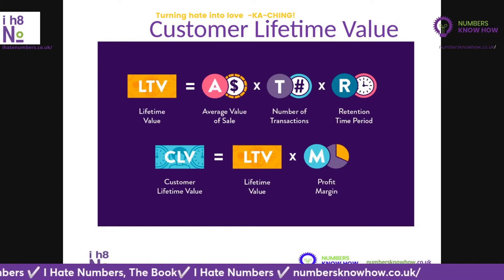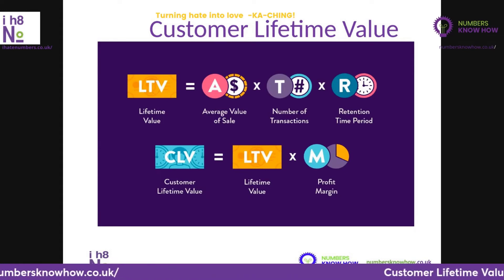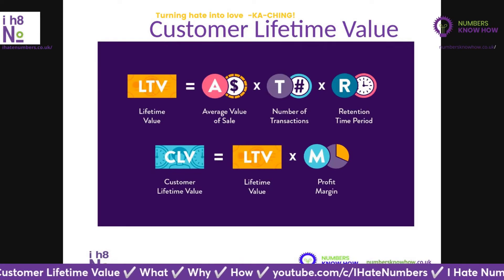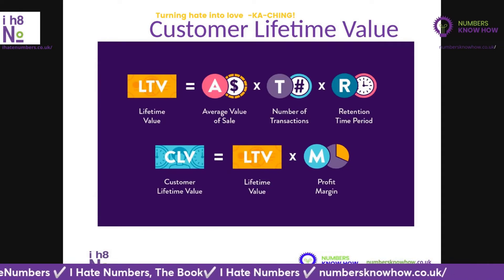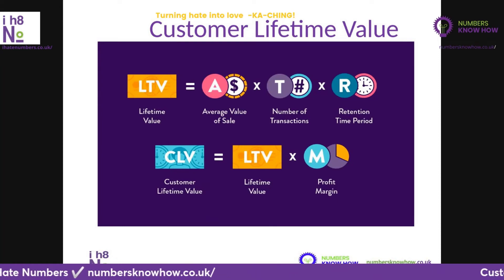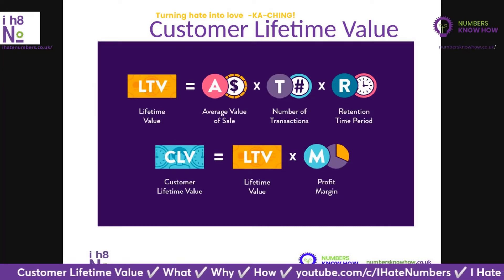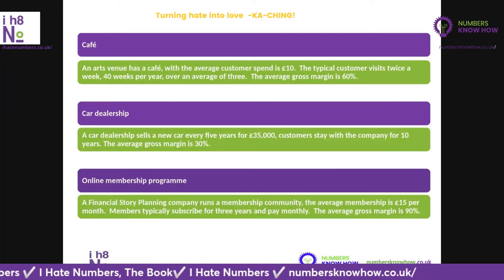That top line gives you the overall monetary lifetime value of that customer. From that revenue figure — the turnover, the income that client generates over their lifetime — we then translate it into the profitability we generate from that customer. One example is to use what's called a profit margin. Next week we'll look at more sophisticated ways to calculate that measure. If it's your first time using this metric, start simpler and get into the habit of doing the calculation — you can always refine and make it more sophisticated as time goes on.